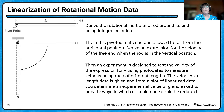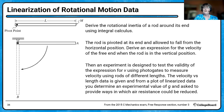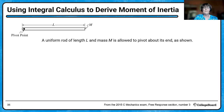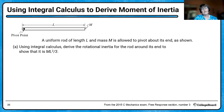Now let's look at another practice problem. We have a bar of mass M and length L pivoted at one end, and we're going to let it fall. We need to derive an expression for the moment of inertia using integral calculus, and also for the velocity of the free end at point B when the rod is in the vertical position. They give you the answer for the moment of inertia to show — so even if you get stuck in part A, you have the moment of inertia to do the rest of the problem.